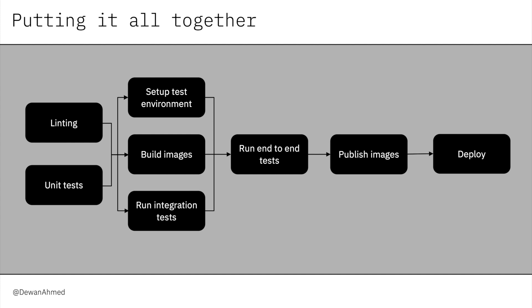When we put all this together, a typical pipeline looks like this. As you can see, the individual boxes are the tasks which could run either sequentially or in parallel. You could also pass on this entire pipeline to a team member who is working on a different project, and they can pick and choose the specific building blocks they want to reuse for their project.